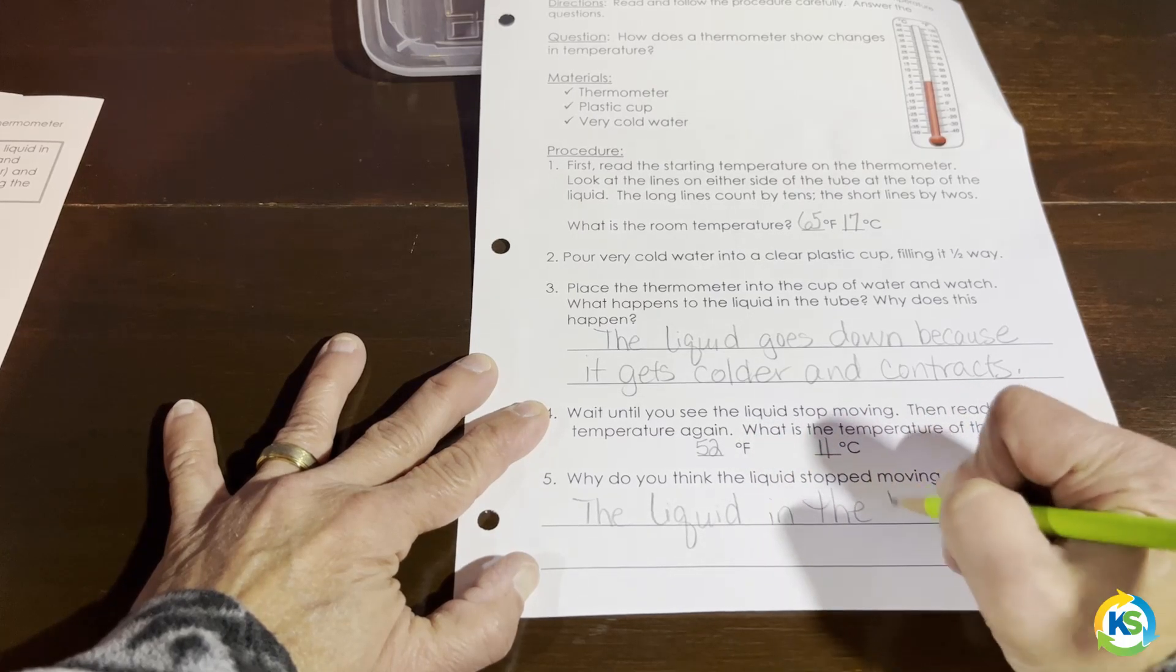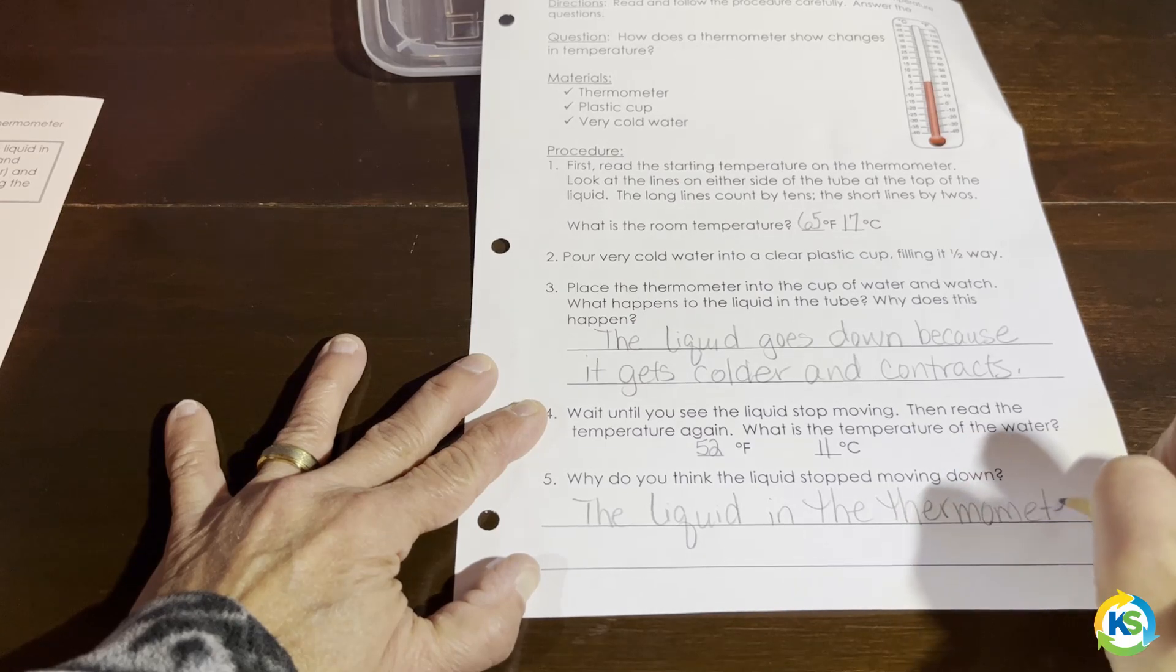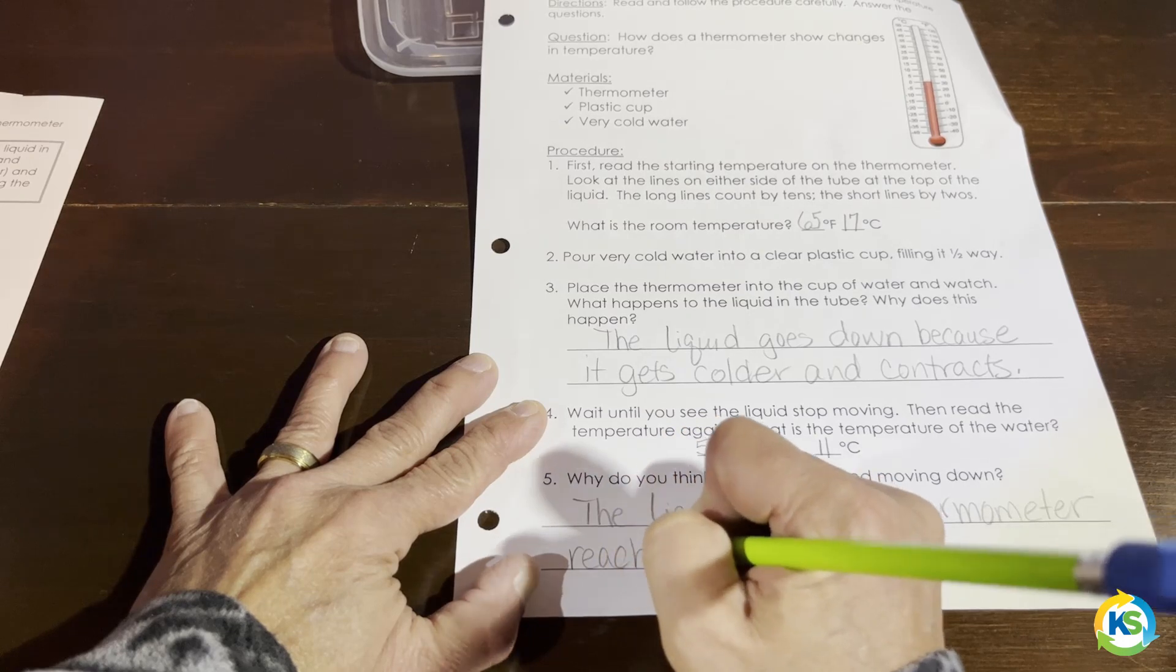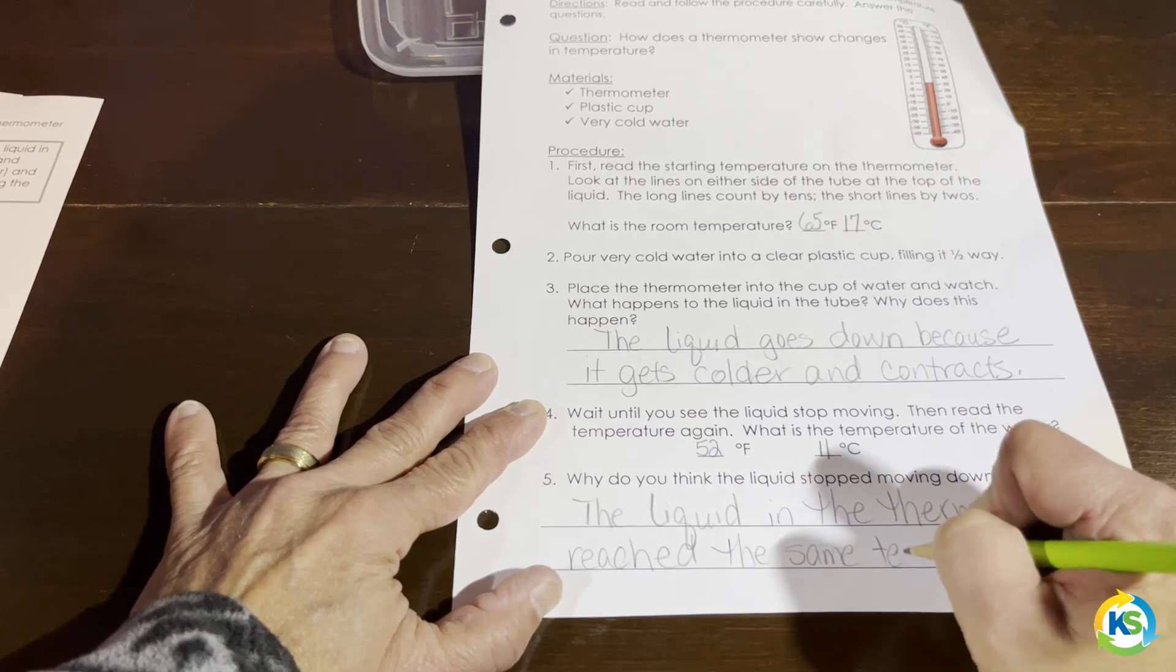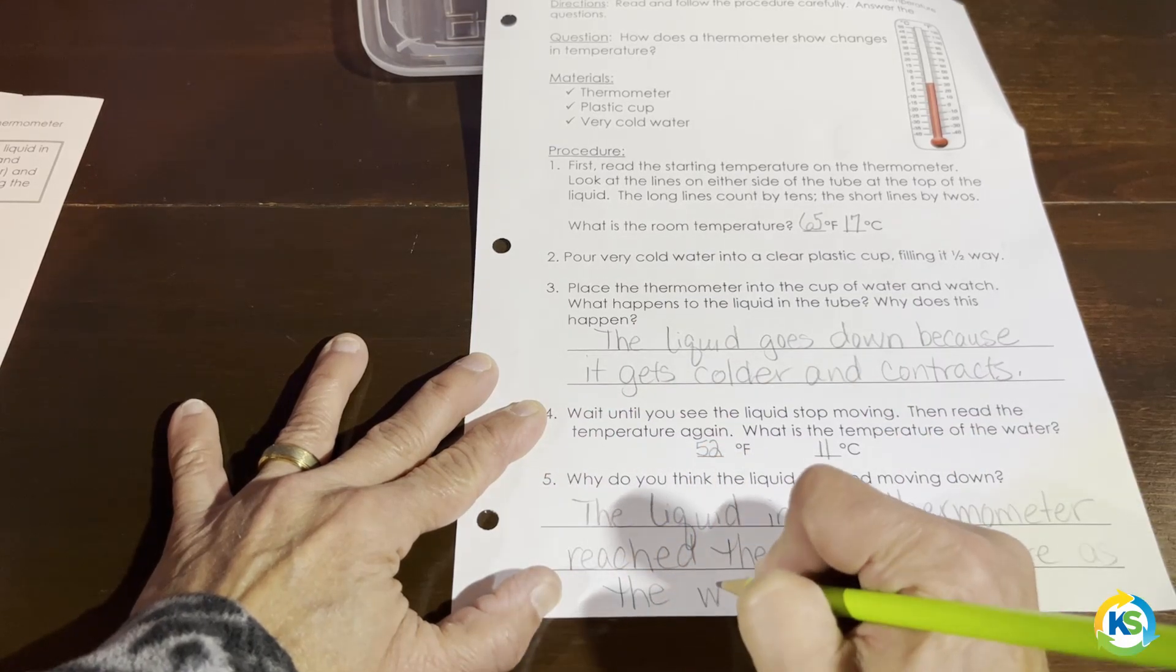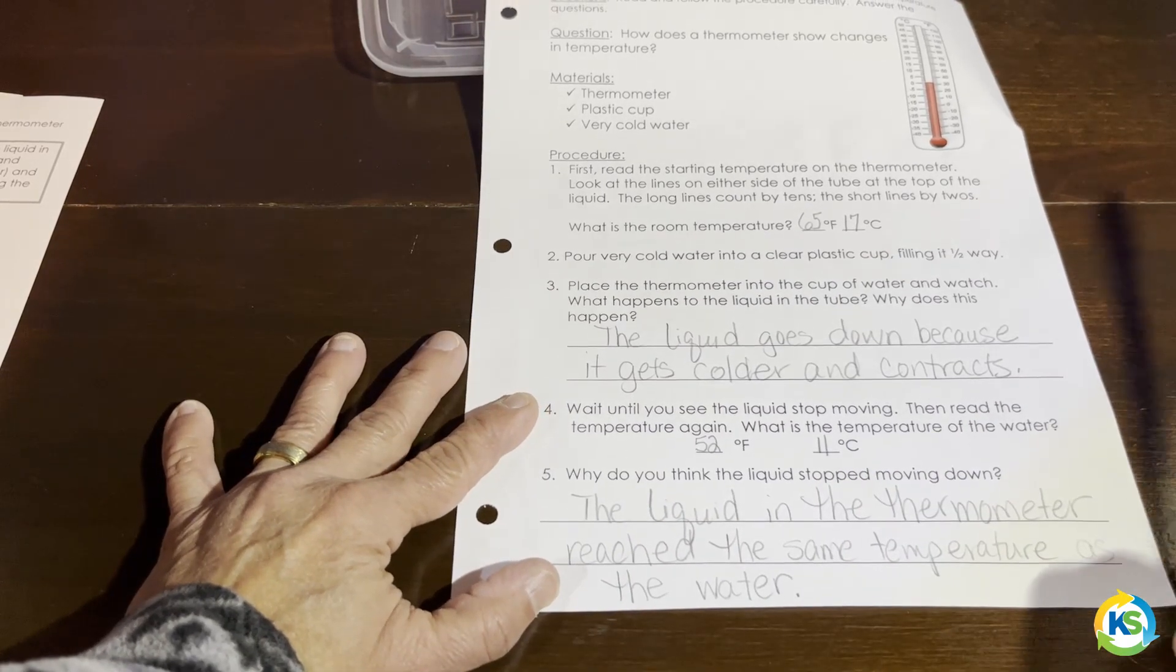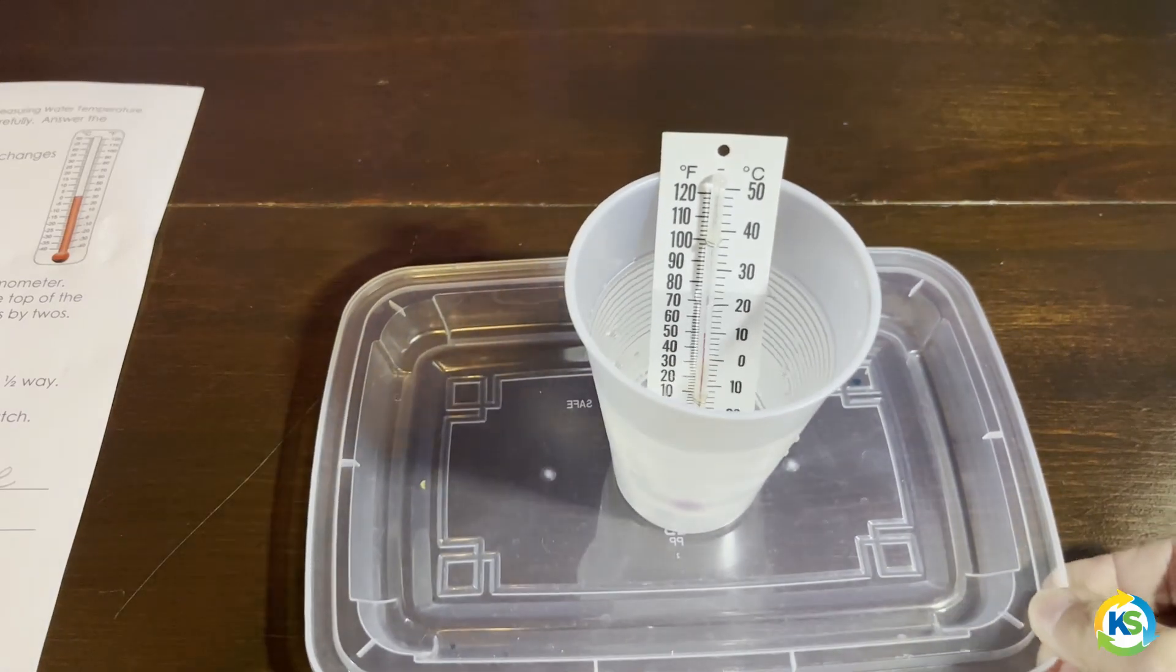...in their thermometer, which is usually alcohol, rubbing alcohol type, reached the same temperature as the water. Now, if you leave it long enough, the water will come to room temperature, and the thermometer will reflect, will go up to room temperature also.